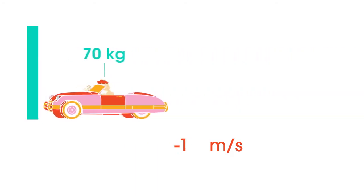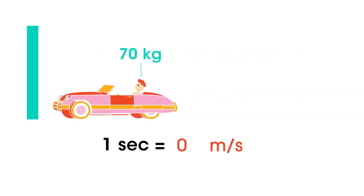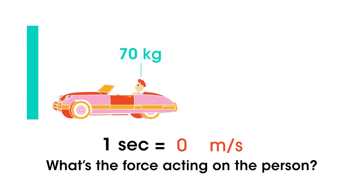Imagine a person with a mass of 70 kilograms is traveling in a car at 15 meters per second. The car comes to a complete stop in one second. What's the force acting on the person? Pause the video while you work it out.